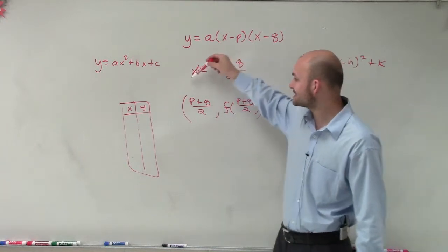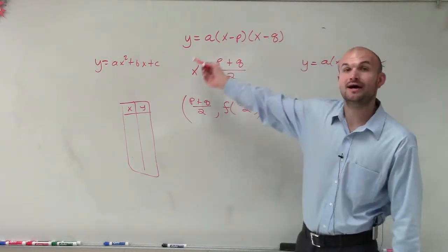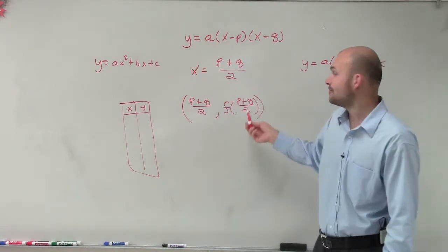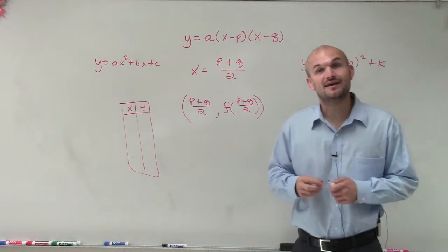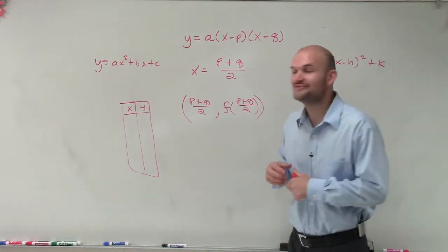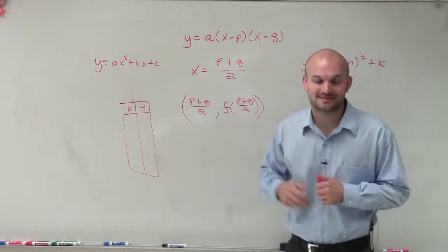But you're going to plug that x value into your function for x to be able to go ahead and find the y value or your output value if it was a function. So there you go, that's how you find the axis of symmetry and vertex when given an intercept form. Thanks.